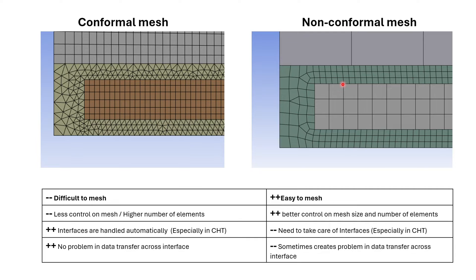There are some advantages and disadvantages for both kinds of mesh. In conformal mesh it is difficult to mesh. On the other hand, non-conformal mesh is easy to mesh. In conformal mesh you have less control on the mesh, it is difficult to mesh, and you always get a higher number of elements.